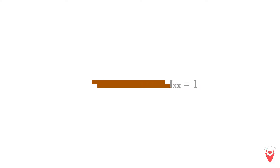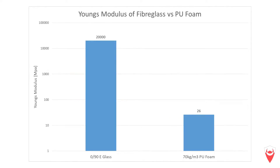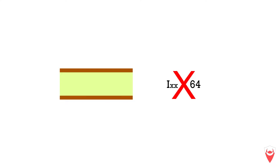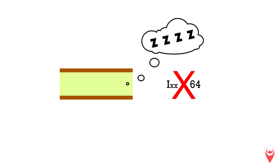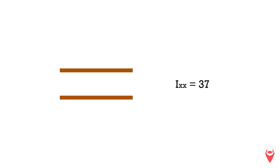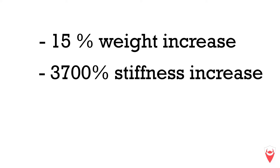Pretend our original skins are half a millimetre thick each, for a total thickness of one millimetre with two skins. We can take this one millimetre section, split it into two skins and put a three millimetre foam core in the centre. That's four times the thickness, which might suggest 64 times the stiffness — but sadly that's not the case. The foam core is much less stiff than the composite skin, so it hardly contributes any stiffness. If we account for this by subtracting the foam's contribution from the full-part calculation, we get 37 times the stiffness of the original part. That's a 15% weight increase for a 3700% increase in stiffness — a pretty good trade-off.